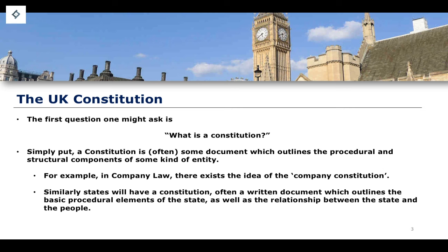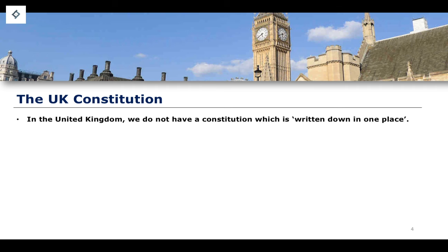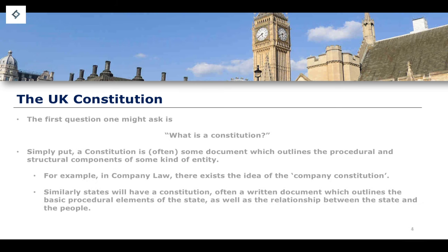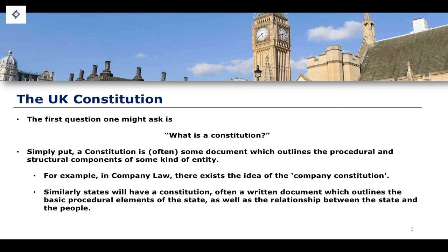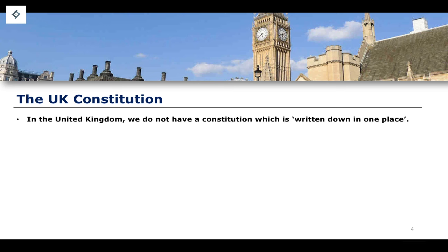States will have a constitution. A constitution is often a written document which outlines the basic procedural elements and structural components of the state, as well as the relationship between the state and the people who live in said state. The interesting thing about the UK's constitution is that, unlike the US — which has a single written document, the US constitution, consisting of a number of articles and 27 amendments — the United Kingdom does not have a single constitution written down in one place. This brings us to our first distinction between different kinds of constitutions.